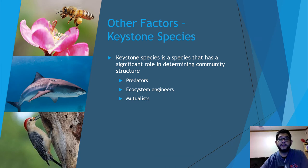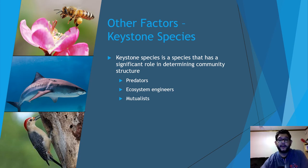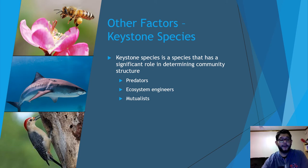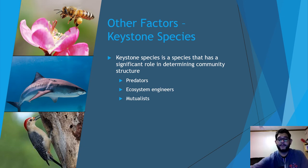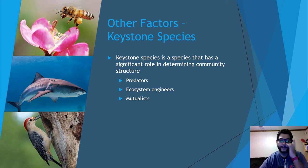Other key factors in succession include keystone species — species that have a significant role in determining community structure. These are typically predators, mutualists like bees and flowers, and what are called ecosystem engineers. A great example is woodpeckers — this is a golden-fronted woodpecker — which create habitat where there was none before, and other species may use that habitat later. Beavers are another example, as they create dams and change ecosystems, which is why they're considered a keystone species.